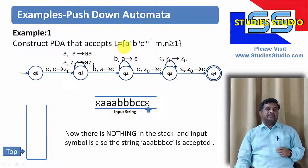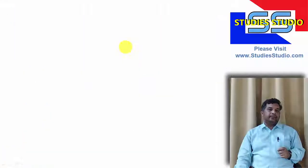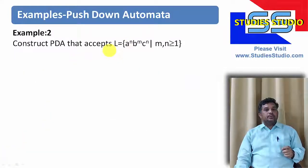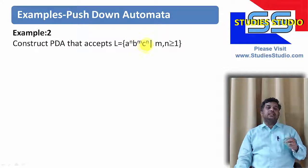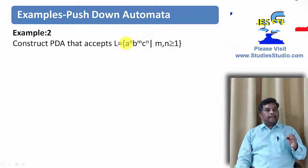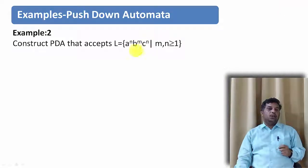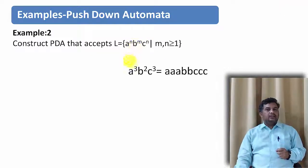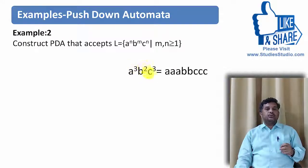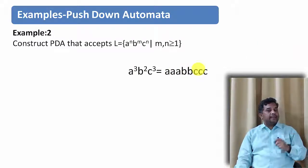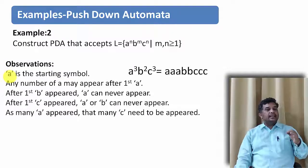Now let us modify the language slightly. The second example: construct a PDA for the language a^n b^m c^n, where m and n are greater than or equal to 1. Here we compare the number of a's with the number of c's, not b's. A sample string would be a³b²c³ — three a's, two b's, then three c's.